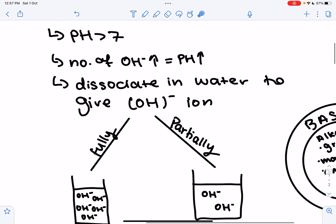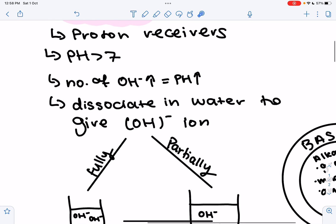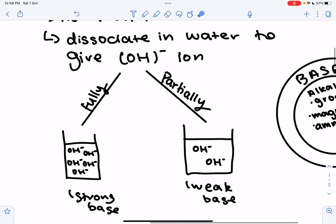So bases are proton receivers. They can be soluble as an alkali or insoluble. And they dissociate in water to give hydroxide ions. So they can fully dissociate to get a strong base such as sodium hydroxide, NaOH, or lithium hydroxide, LiOH. Or they can partially associate to get something like ammonium hydroxide, NH4OH.